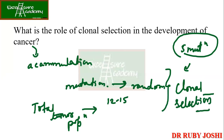So this is clonal selection. The role of clonal selection in the development of cancer is that it leads to the continued development of more rapidly growing and increasingly malignant tumors.